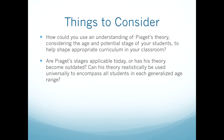Piaget believed that these four stages of development are universal, and that children never skip a stage and move to the next. It is important to challenge the abilities of a child, but not to give them tasks or information that is too advanced for their level of understanding. Based on what we've discussed today, how could you use your understanding of Piaget's theory, while considering the age and assumed stage of your students, to help shape appropriate curriculum in your classroom? Is his theory of developmental stages still applicable, or has it become outdated? Can this theory realistically be used universally to encompass the students who fall into each generalized age range?